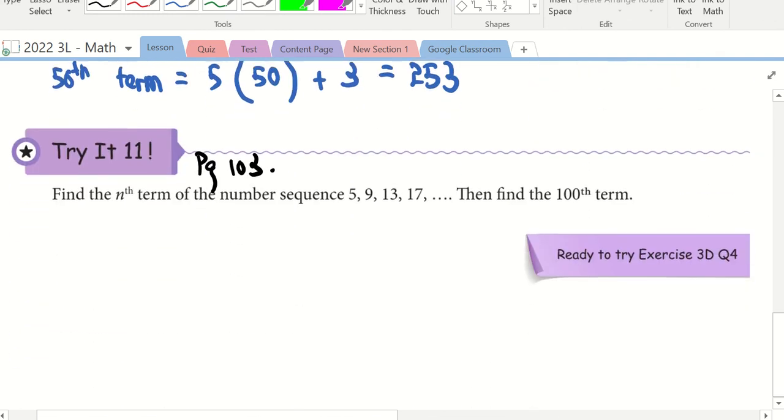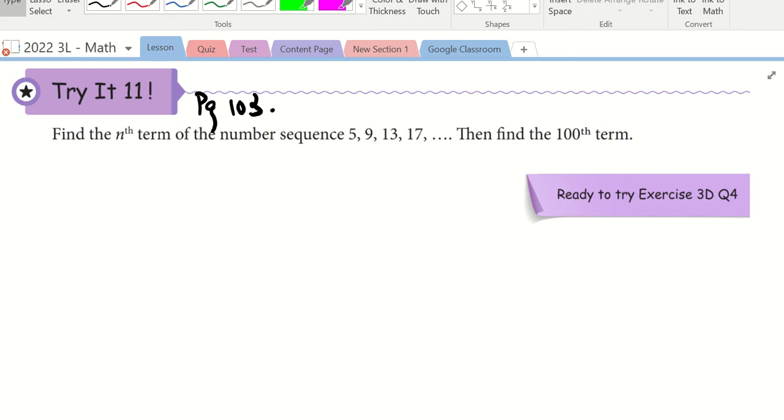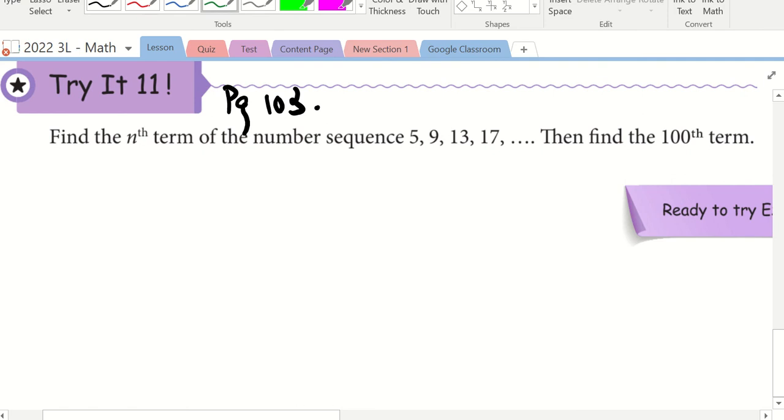Page 103. I'll let you try first. So I need to find the 100th term. But before I do that, I need to find the n term, which is the general term. What do we do first? Draw arrow. Notice, what do I do to get from 5 to 9? Plus 4. What do I do to 9 to get to 13? Consistently, I need to add 4. So what should we write down? Consistently, 4. So I need to write down number 4 with a bracket and N.